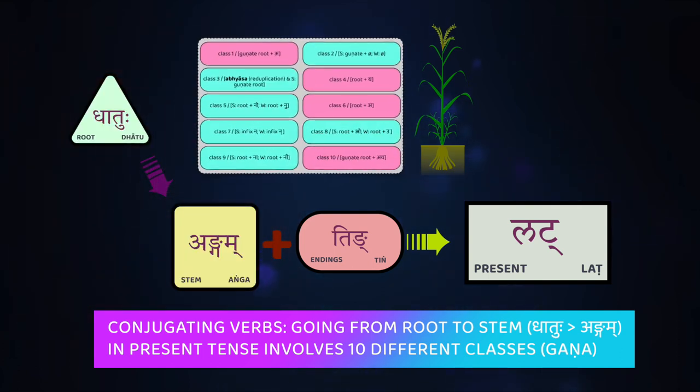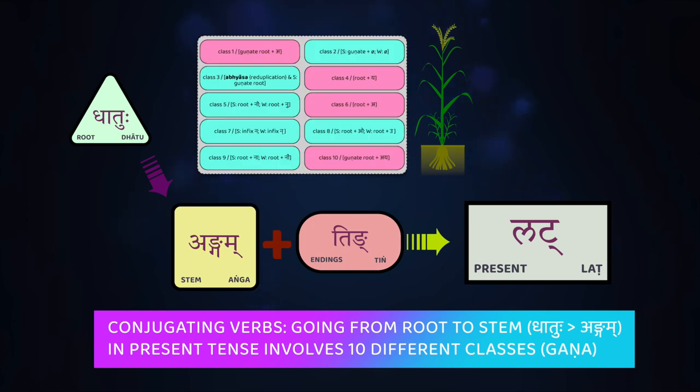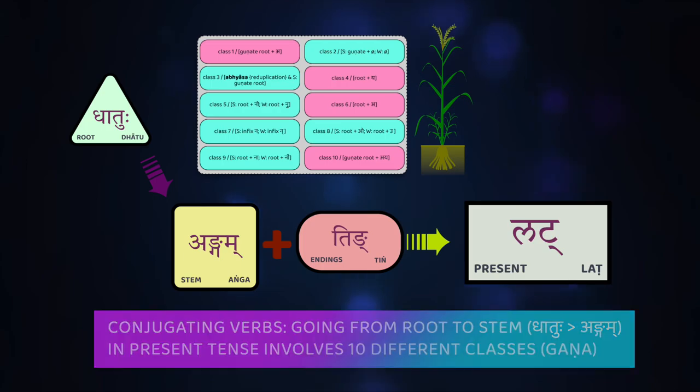This is going to involve ten different classes of verbs, each with their own set of rules about how the stem gets formed from the verb root. That's where it gets complicated — way more so than many other languages. But if we take our time with the classes, with these gaṇas as they're called, and go through them one at a time carefully, we'll be all right.